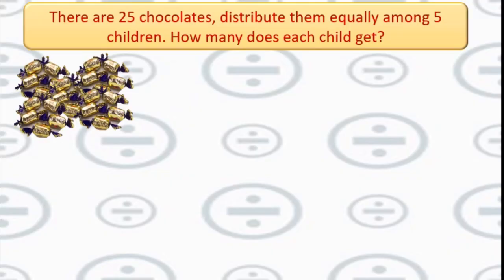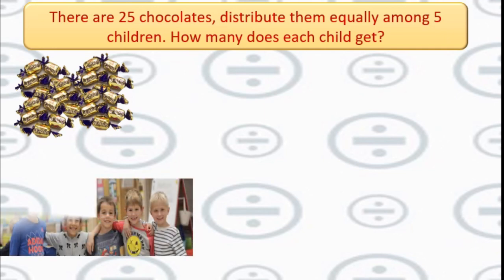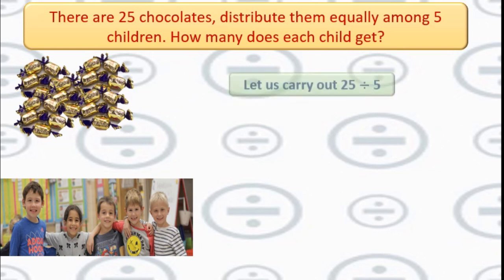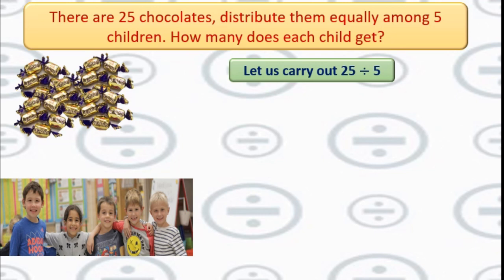First we will read the sum, understand it, and then go to solve. There are 25 chocolates. We will distribute them equally among 5 children. How many does each child get? We will carry out the division — total number of chocolates divided by number of children.